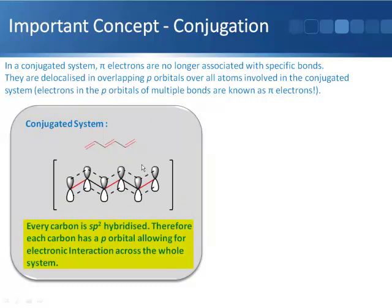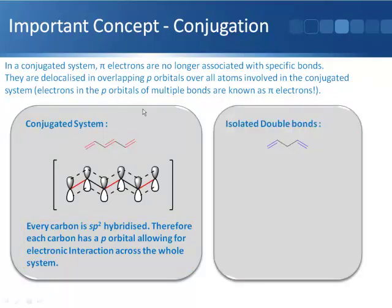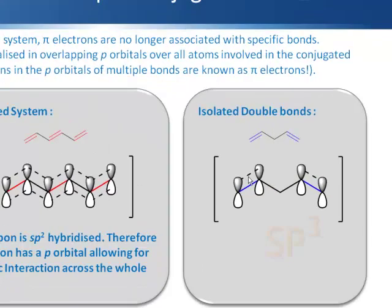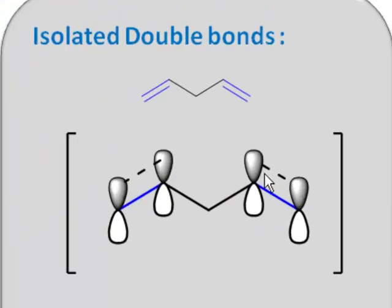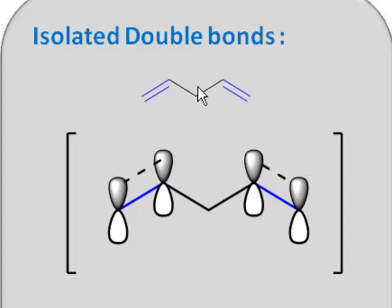Every carbon is sp2 hybridized. Therefore, each carbon has a p orbital allowing for electronic interaction across the whole system. We compare that to a pair of double bonds that aren't conjugated — that have an sp3 hybridized carbon between them. We can see that these two orbitals can overlap in a conventional double bond, as can these. But these two are too far away from each other to have this sideways overlap. So you don't extend this conjugated pi system through this chain because there's an sp3 hybridized carbon atom in the way.